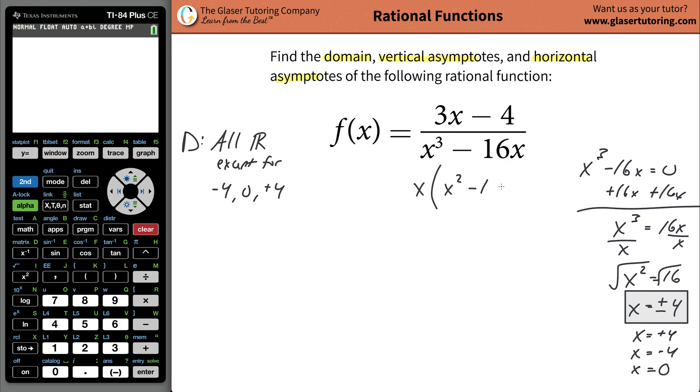I'm like, oh, that's a perfect square. So I can write this as x, then times x plus 4, and x minus 4. That would be the fully factored denominator.